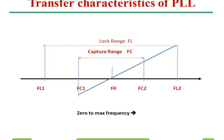At FC1, before FC1 the output will not be equal to input. At exactly FC1, output becomes equal to FN, and the output has now captured. It will follow the input, and when you increase the input it will increase continuously up to a certain frequency. The frequency at which the output doesn't follow the input is FL2. When moving from 0 to maximum, FC1 is where output becomes equal to input, and FL2 is where output stops following the input.